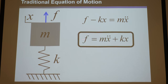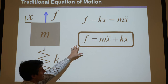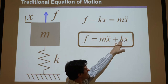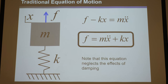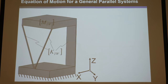Rearranging, we get this equation where the input force equals mass times acceleration plus stiffness times displacement. Note this equation neglects damping. That's just the single simplified one-dimensional case of a point mass on a spring that can only move in one direction.